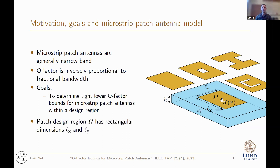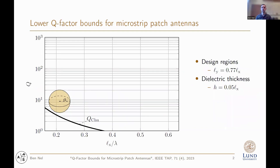We choose this design region to be a rectangular design region. Then, using current optimization, we determine the lower Q-factor bounds within this design region. Here are some classical patch geometries that can fit within this design region. For this example, we consider this constraint on the patch design region with this dielectric thickness.